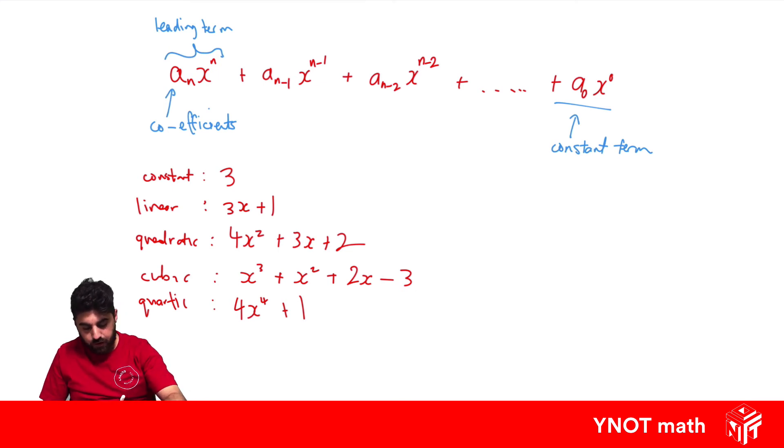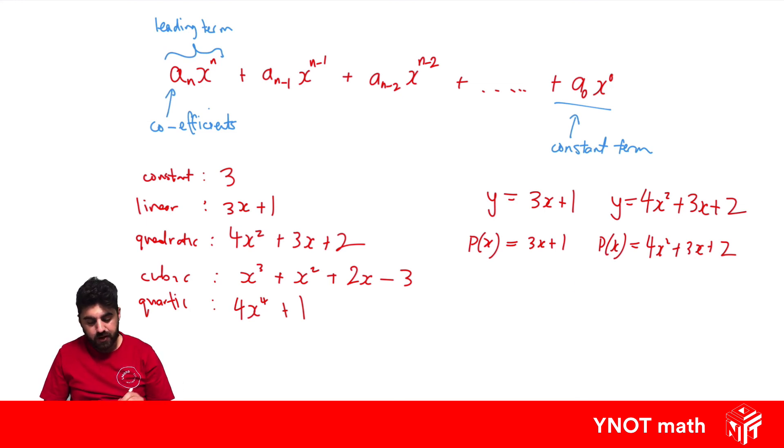And when we look at polynomials, we're very used to seeing y equals like 3x plus 1 or y equals 4x squared plus 3x plus 2. With polynomials we actually like to use function notation. So instead of y, we can write p(x) equals 3x plus 1 or p(x) equals 4x squared plus 3x plus 2. And if you haven't come across function notation, watch our video on function notation for this to make a little more sense.